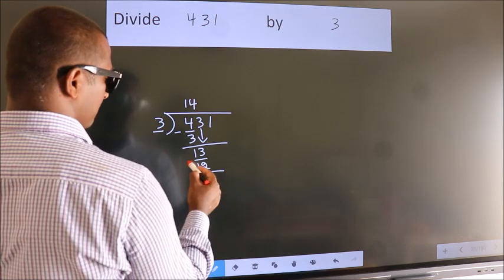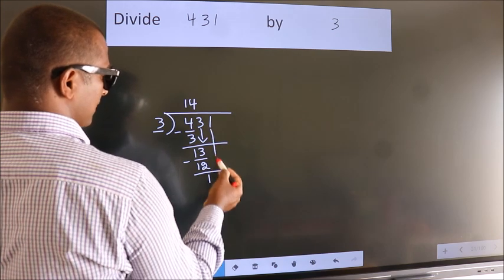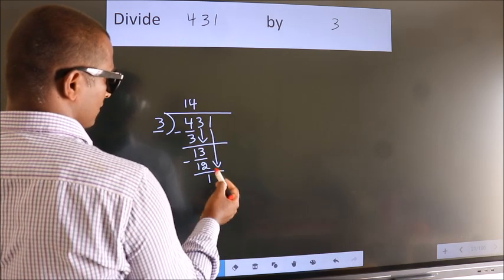Now, we subtract. We get 1. After this, bring down the beside number. So, 1 down.